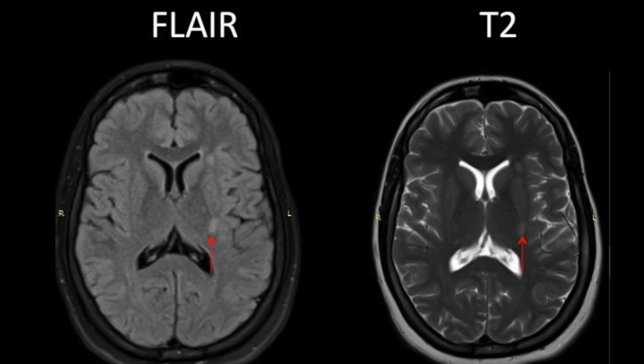This is a FLAIR sagittal image which classically shows the concentric irregular alternating signal intensity lesion within the periventricular white matter. In addition, few periventricular white matter and posterior fossa hyper-intense foci were also seen. These are the FLAIR and T2-weighted images which show additional oval hyper-intense foci on the left side.